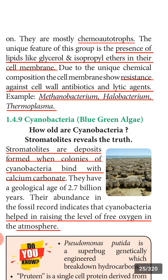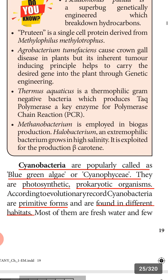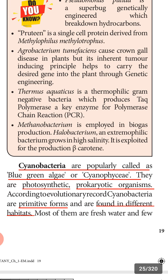Cyanobacteria are photosynthetic, and the byproduct of photosynthesis is oxygen. So these bacteria helped in raising the oxygen level in the atmosphere. Cyanobacteria are also called blue-green algae or Cyanophyceae. They are photosynthetic — they can prepare their own food using sunlight energy — and they are prokaryotic organisms that do not have a well-developed nucleus.